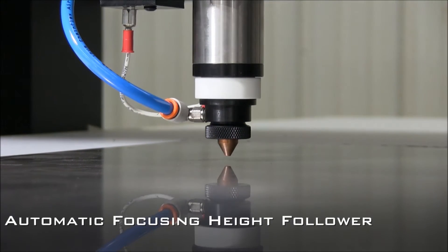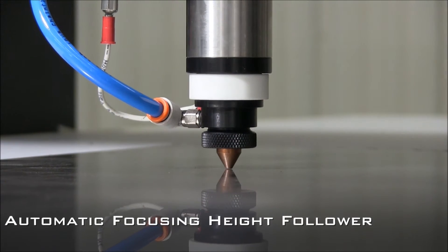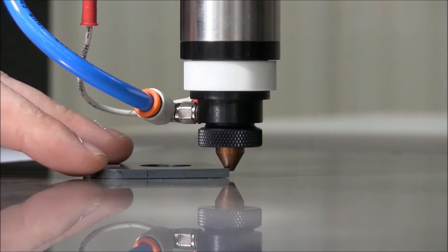The automatic focusing height follower, which was developed by Kearn Lasers, is one of the key elements for consistent, clean cutting over our large format tables.